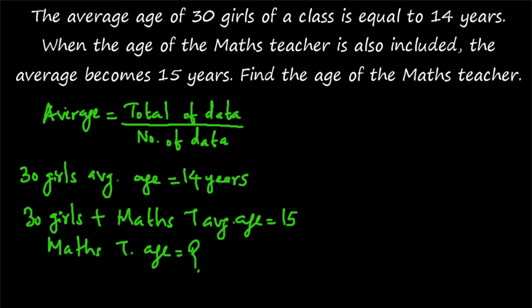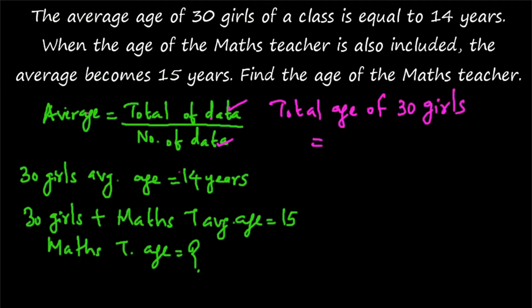So how to do this? This is a basic question. As we know, average equals total of data divided by number of data. We know that 30 girls' average age is 14 years. So what is the total age of 30 girls? The total age equals average multiplied by number of data. So total age of 30 girls equals 14 into 30.